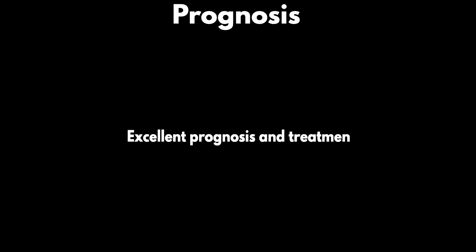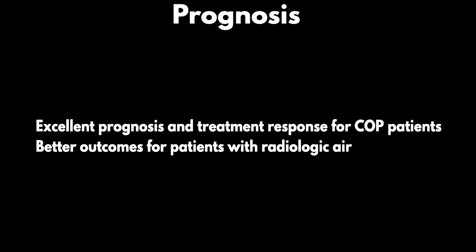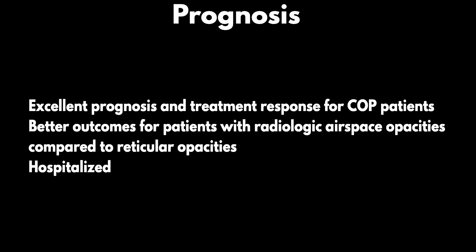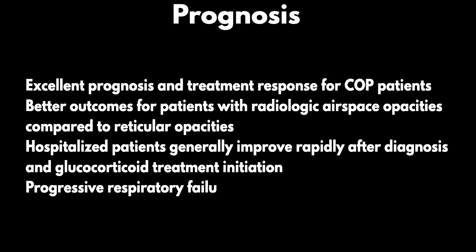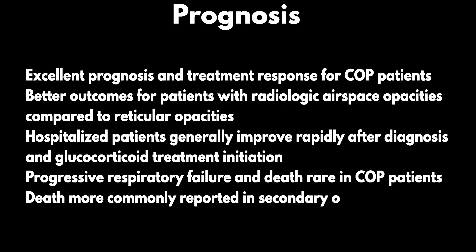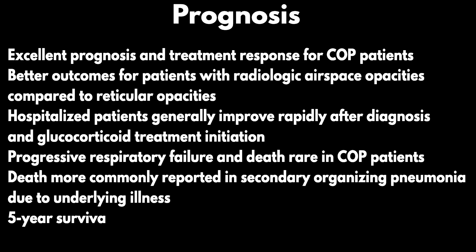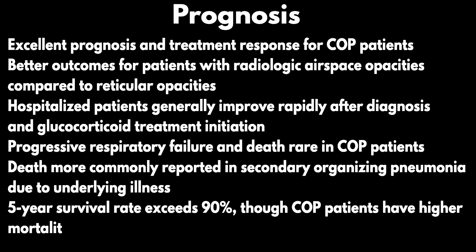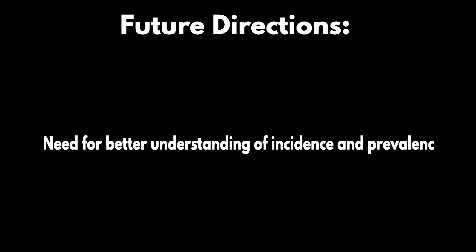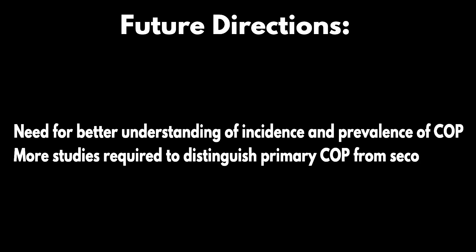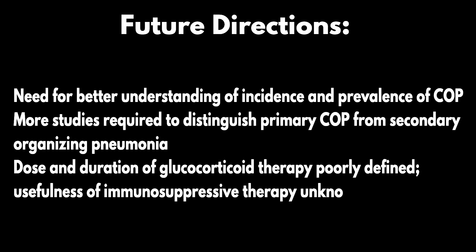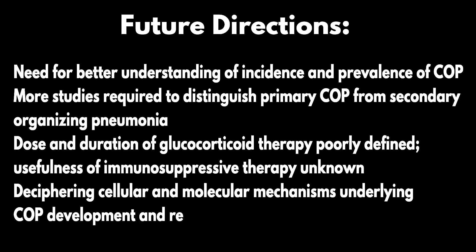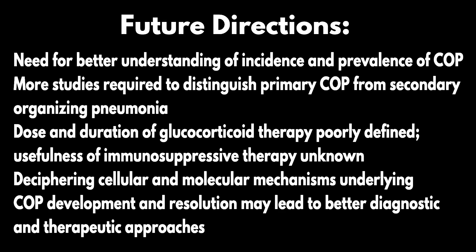Prognosis for COP patients is excellent, with better outcomes for patients with radiologic airspace opacities compared to reticular opacities. Hospitalized patients generally improve rapidly after diagnosis and glucocorticoid treatment initiation. Progressive respiratory failure and death are rare in COP patients; death is more commonly reported in secondary organizing pneumonia due to underlying illness. Five-year survival rate exceeds 90%, though COP patients have higher mortality than the general population. Future directions include the need for better understanding of incidence and prevalence of COP, more studies to distinguish primary COP from secondary organizing pneumonia, better-defined glucocorticoid dose and duration, and deciphering the cellular and molecular mechanisms underlying COP development and resolution to improve diagnostic and therapeutic approaches for organizing pneumonia and UIP.